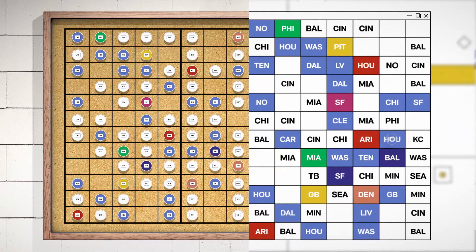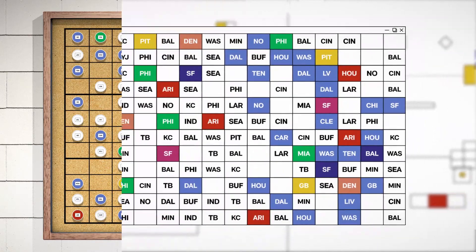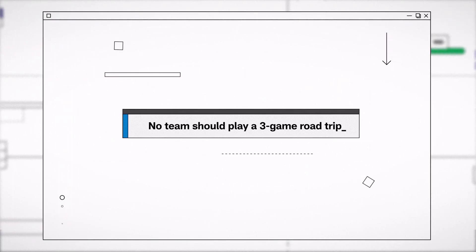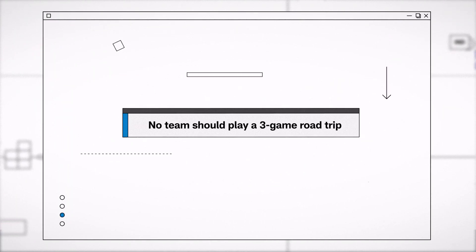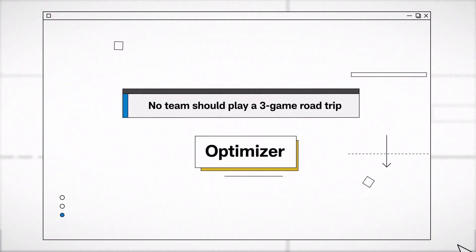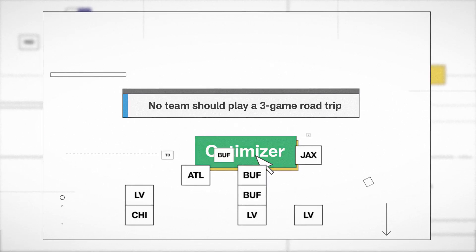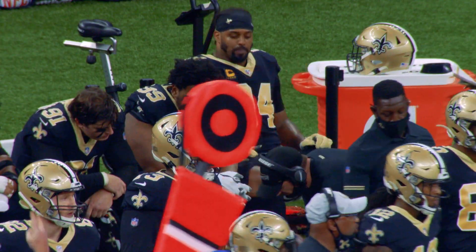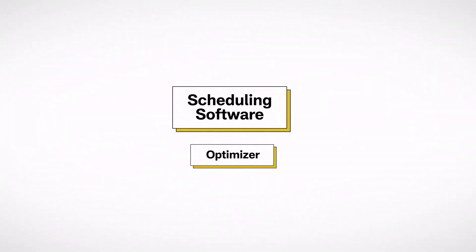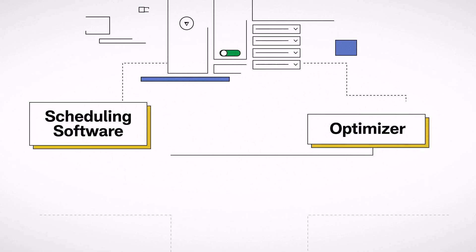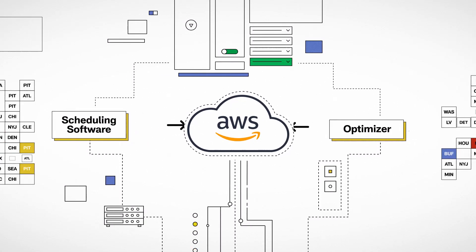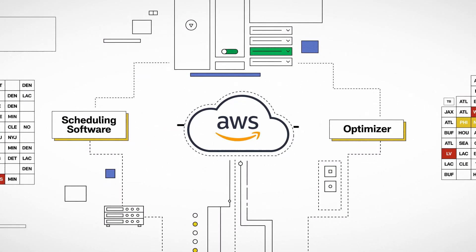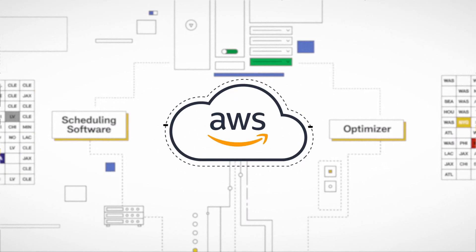We write the rules in the software, and then the software from Optimal Planning uses an optimizer called Gurobi Optimization, which takes all the rules and really tries to figure out: if this is an infinite solution space and these are all the rules I have to follow, where do I even start? What we're able to do between Optimal Planning Solutions and Gurobi is utilize the AWS cloud.